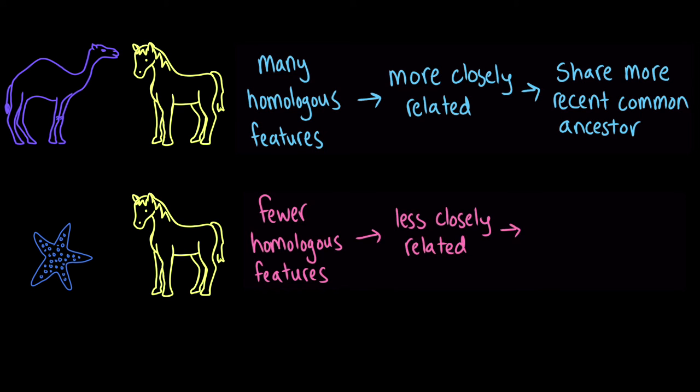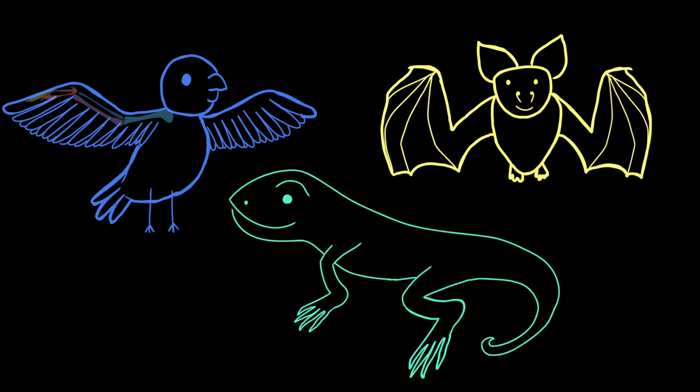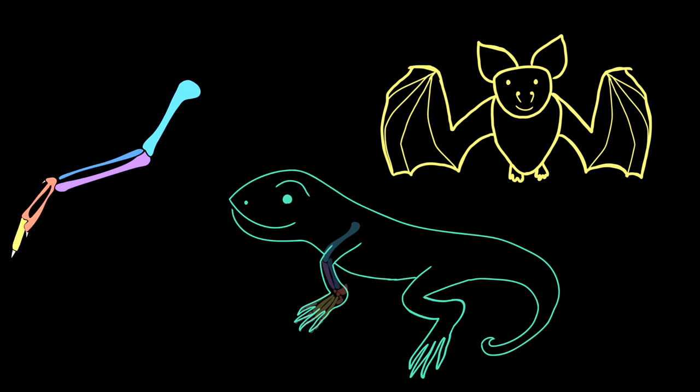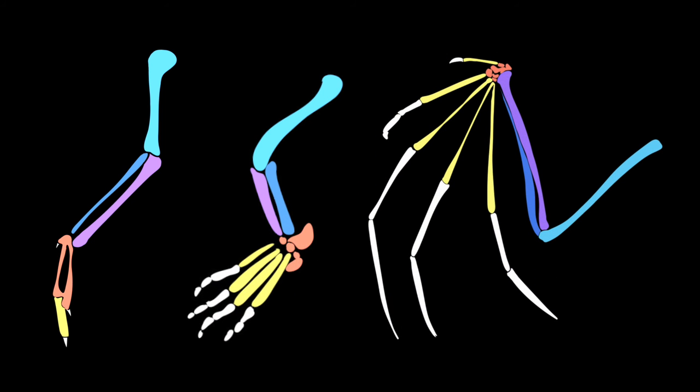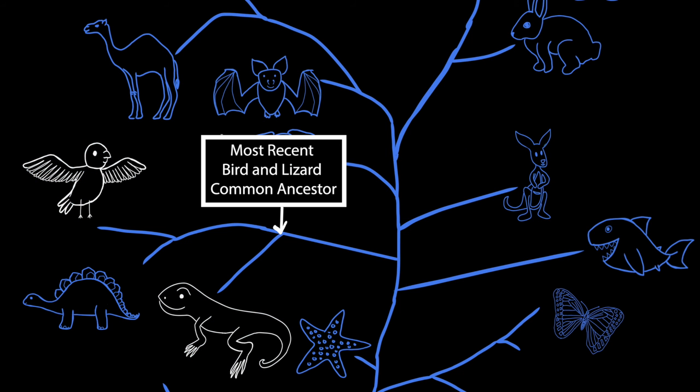For example, the wing of this bird has more structural similarities to the leg of this lizard than to the wing of this bat. This indicates that the bird is more closely related to the lizard than it is to the bat, which means that the bird and the lizard share a more recent common ancestor than the bird and the bat do.